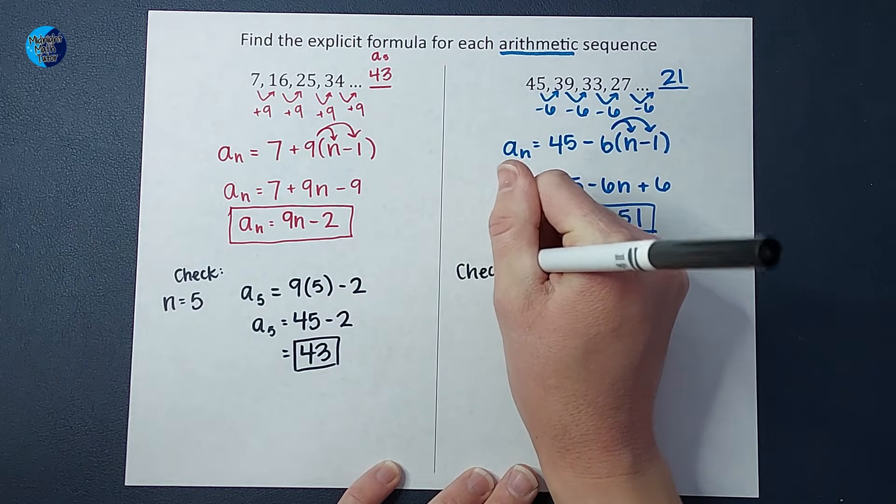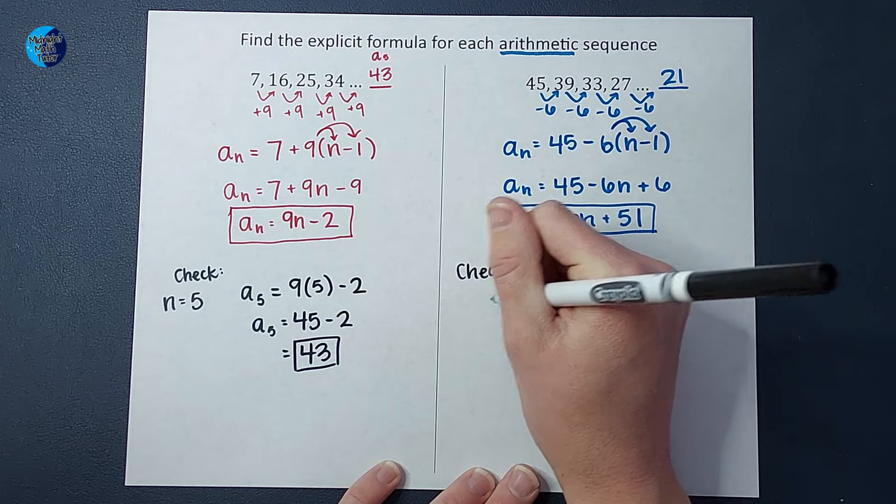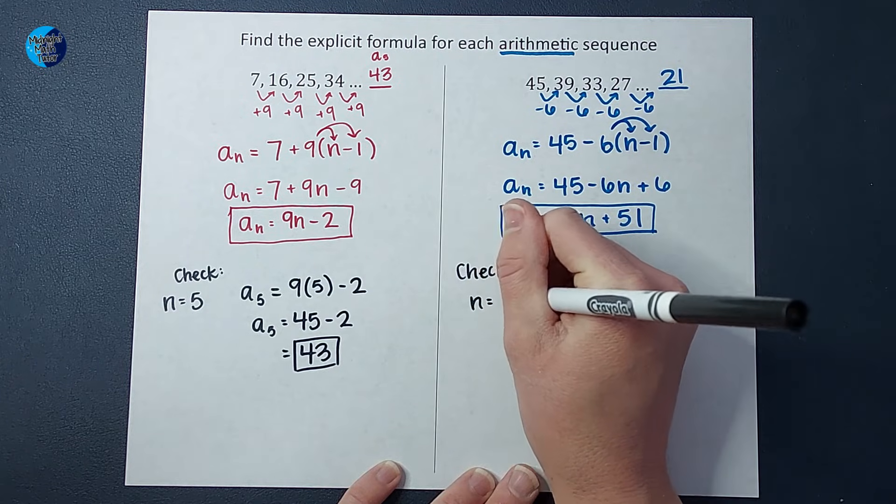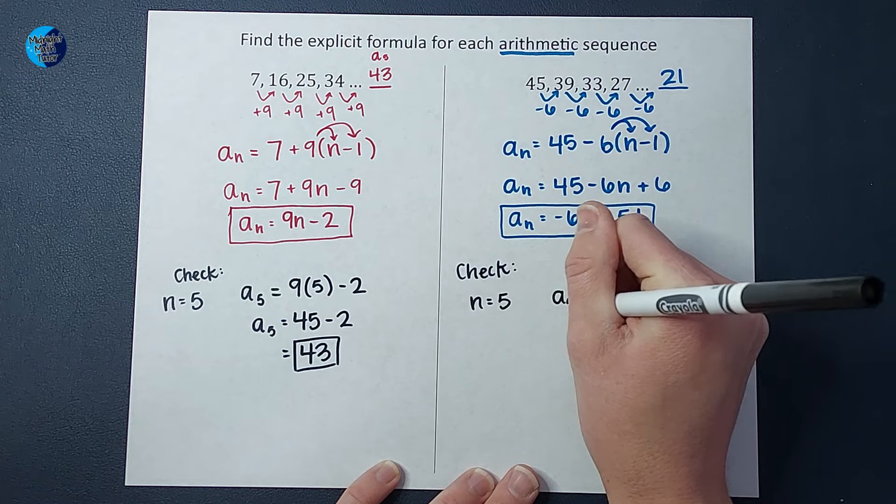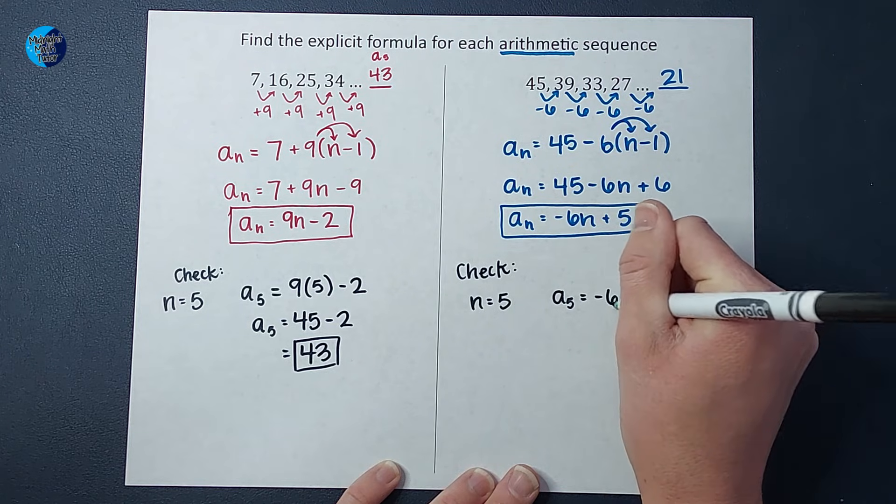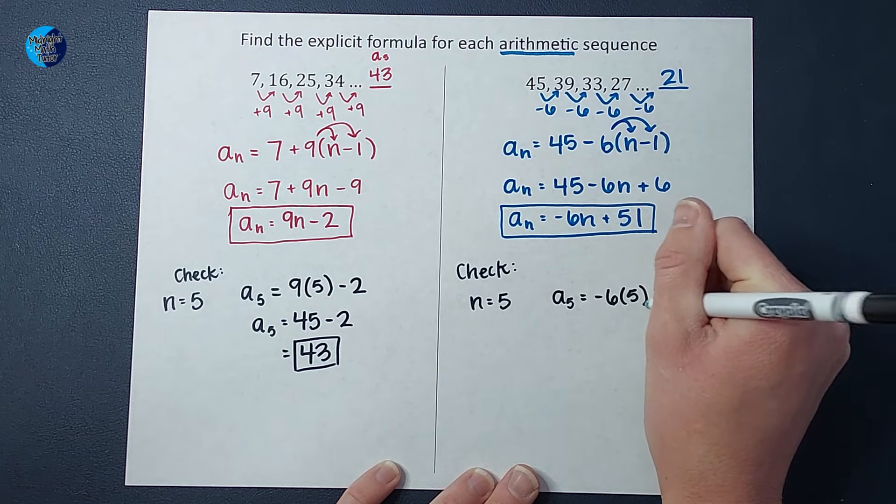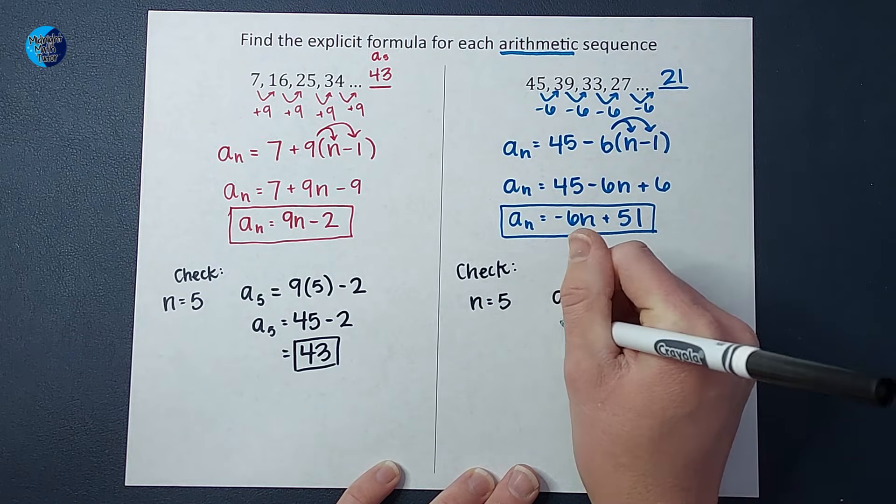So we're going to check. So we want to know the fifth spot, n equals 5. So I'm going to say a sub n equals negative six times 5 plus 51.